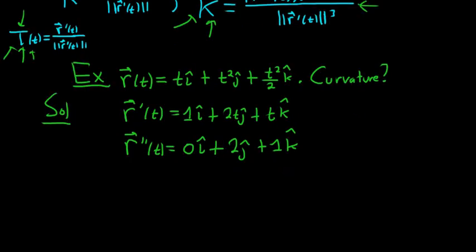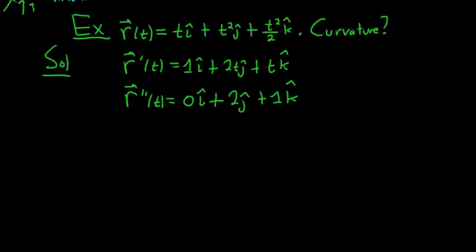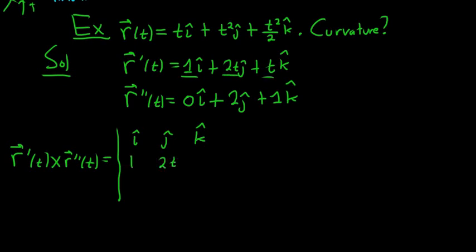So now let's take the cross product, and that will be the numerator, well the magnitude of that will be. So we have r' cross r''(t), and that's equal to i, j, k, taking the cross product. And then we use the components, so 1, 2t, and t. And then 0, 2, and 1.